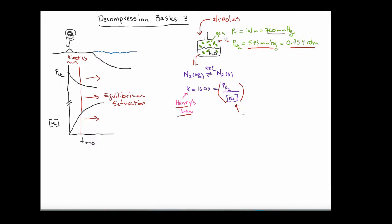The square brackets denote molarity, defined as moles of solute — in this case nitrogen gas — dissolved per liter of tissue. For simplicity I've defined the volume of my tissue as exactly one liter, and the volume of the air sac as also one liter. This makes the manipulation of numbers easier for the viewer to understand.